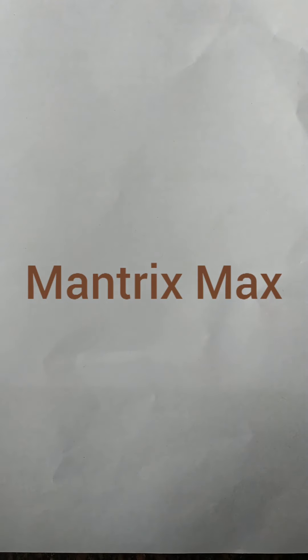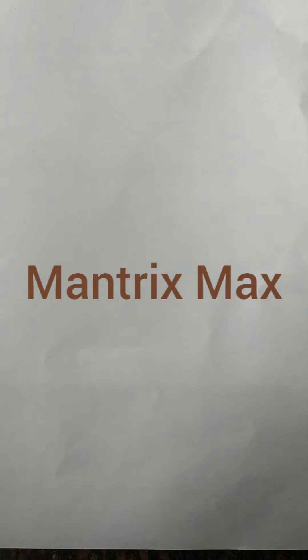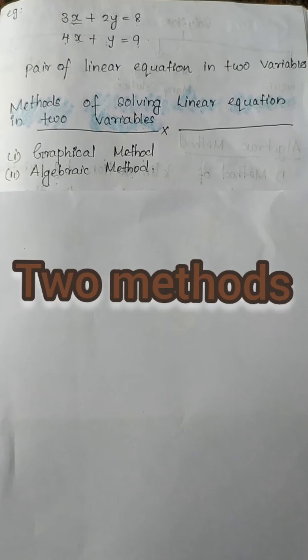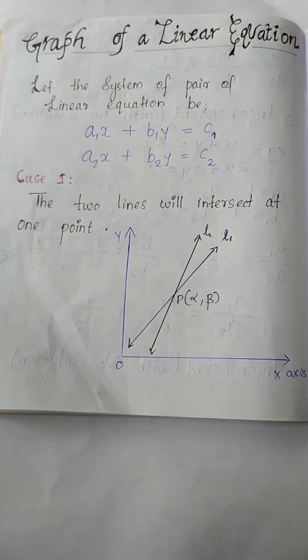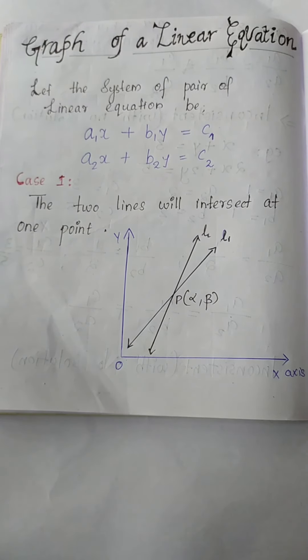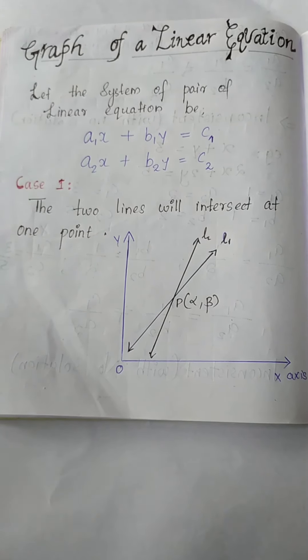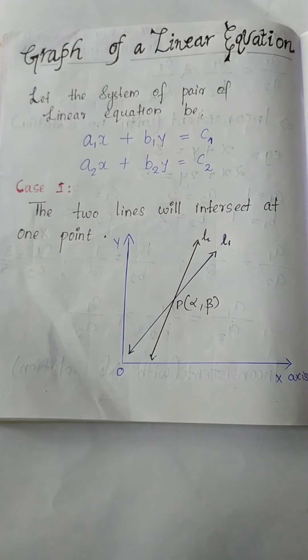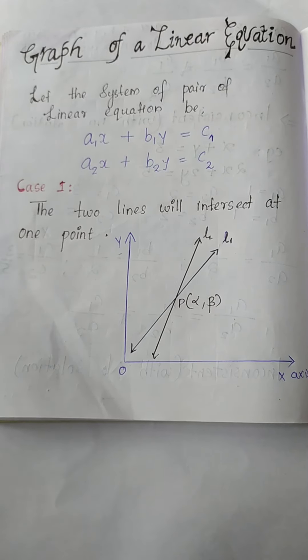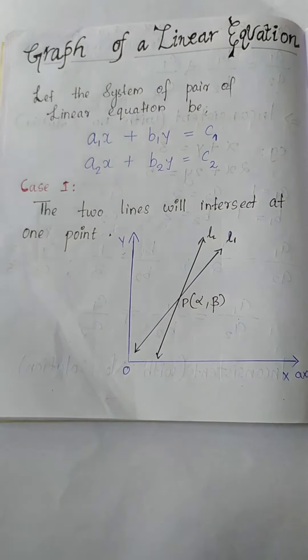Hi friends, welcome back to Bentrix Math channel. Today we are going to discuss the second part of the chapter linear equations in two variables. We already discussed that there are two methods for solving linear equations in two variables: graphical method and algebraic method. In the case of graphs, there are three types of graphs representing three types of solutions.